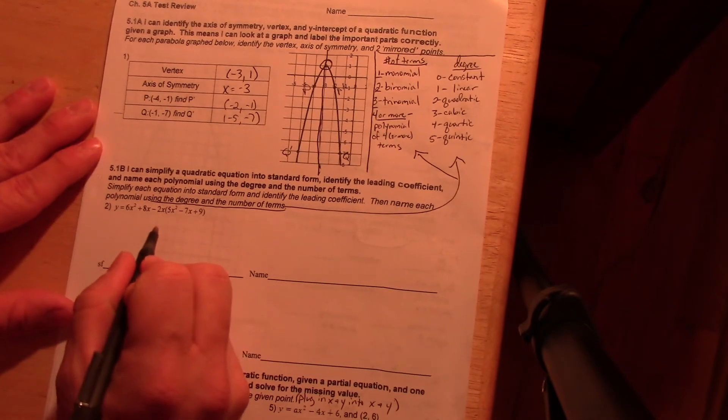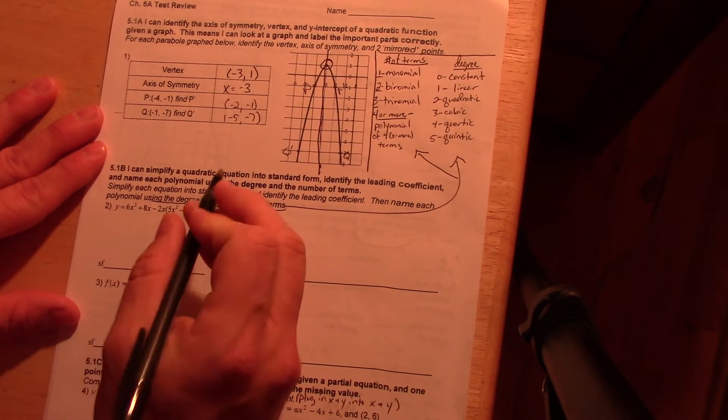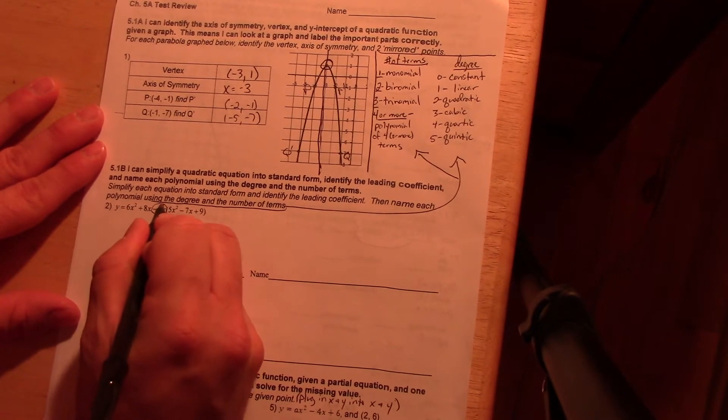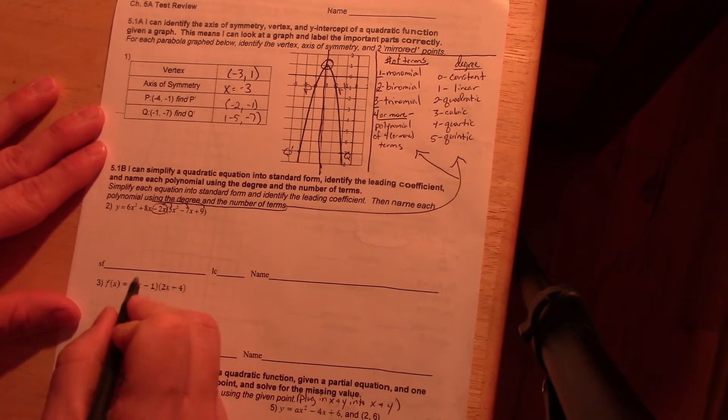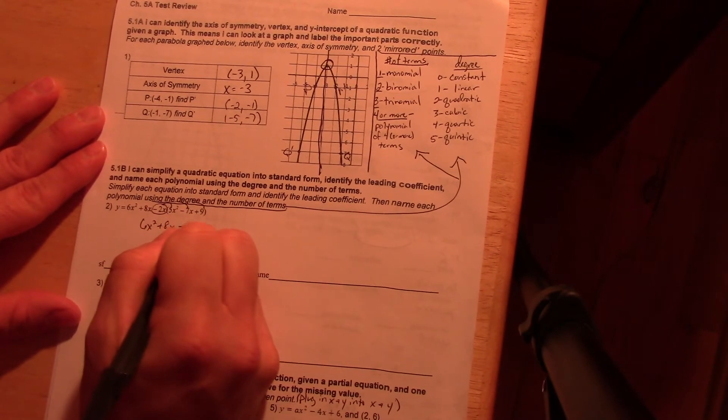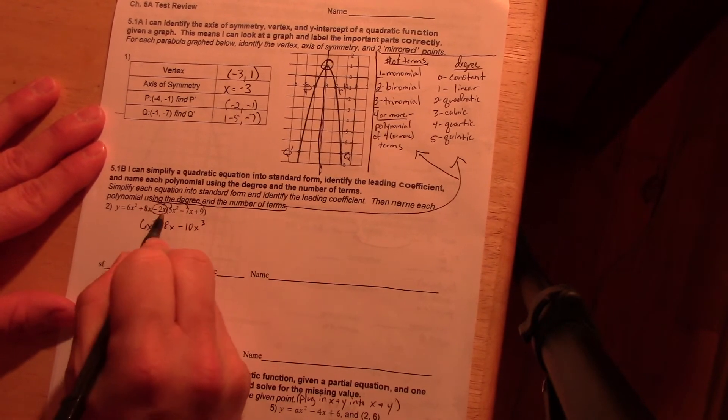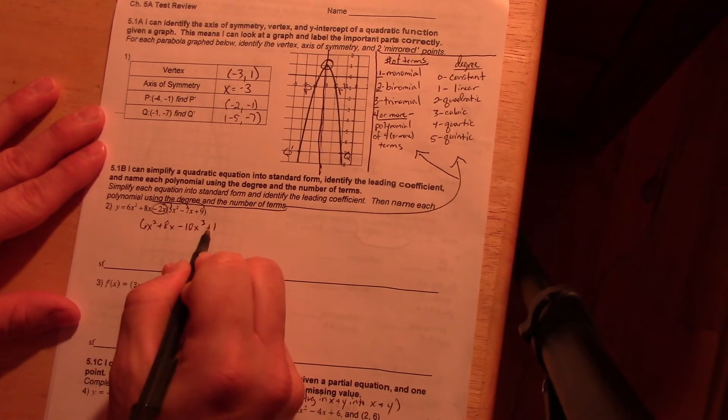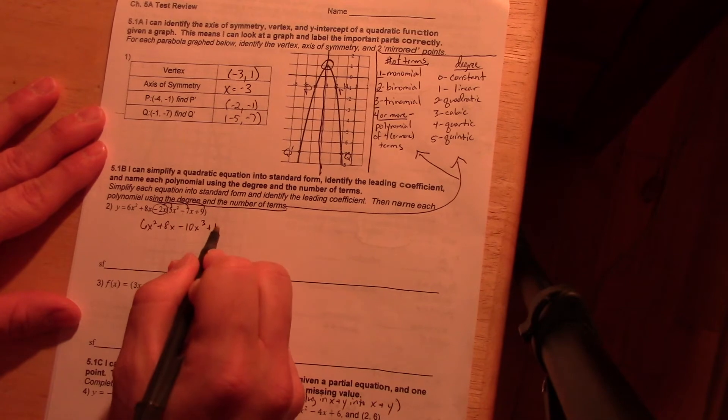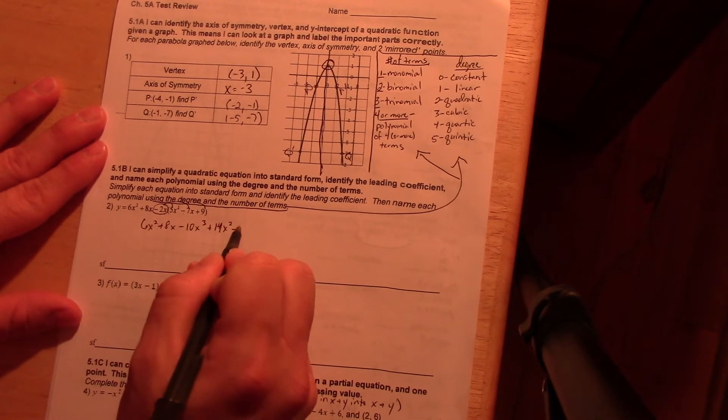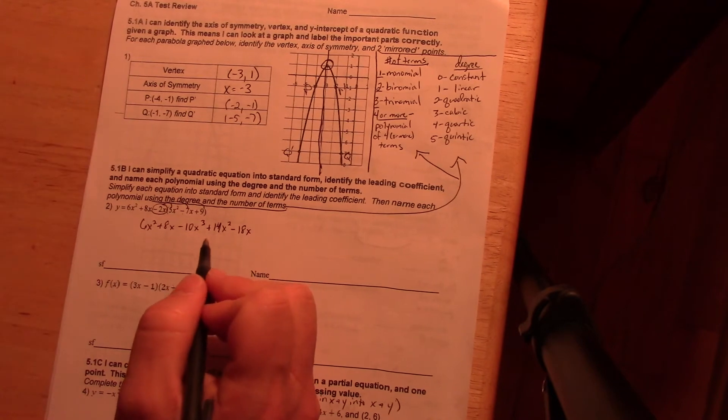Down at the bottom, what do we got to do here first? Well, we are going to have to distribute, which in this term, this one will foil in this. It's really taking this negative two x and distributing it all the way through. So I have six x squared plus eight x minus ten x cubed, because I got one, two, three, minus four, or excuse me, plus, because a negative times a negative is positive fourteen, x squared, minus eighteen x. Okay?